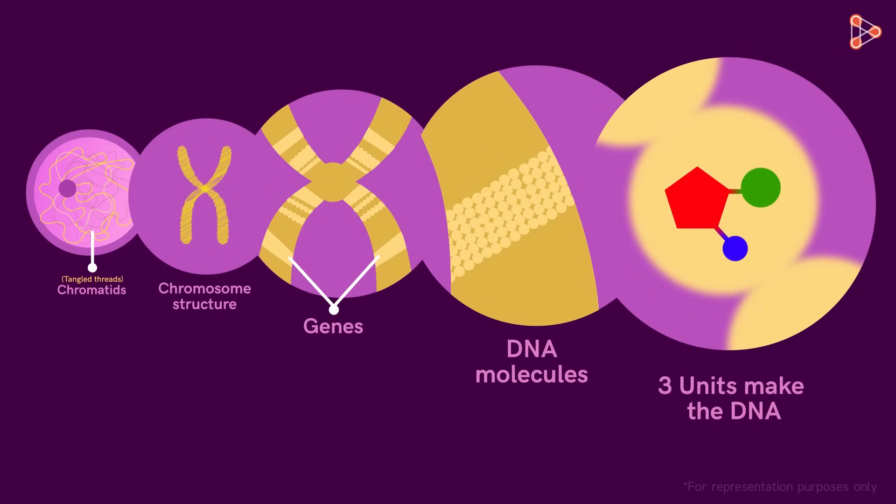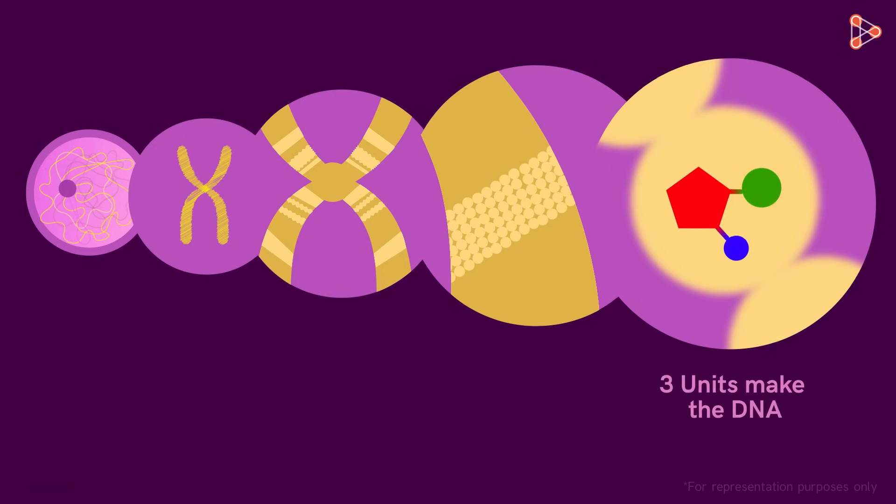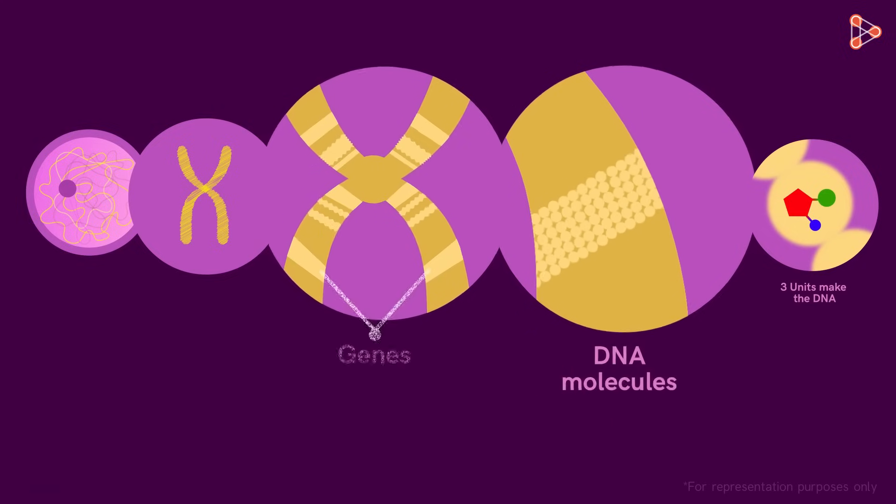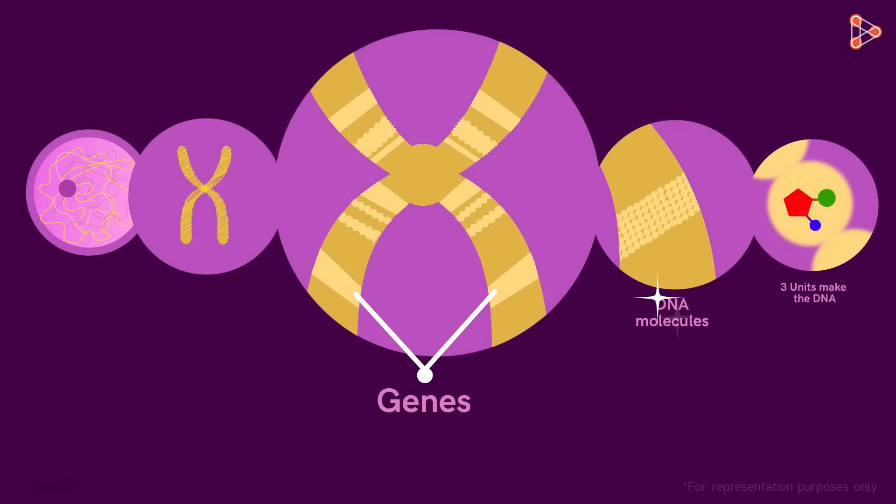Now to quickly review what we learned, let me remove the text from the screen. These three combine to give us a single molecule. And many such DNA molecules form long chains. What is a sequence of DNA molecules called? That's right! It's called a gene. So technically, segments of DNA molecules which form functional units are called genes.